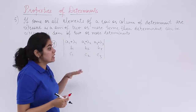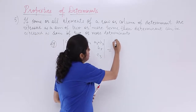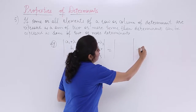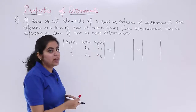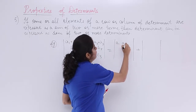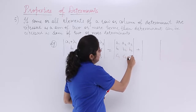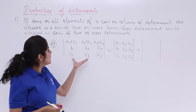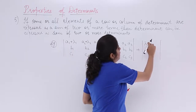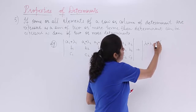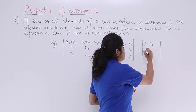According to this property, you can classify this determinant as the sum of two determinants. The first determinant has a1, a2, a3 in the first row, then b1, b2, b3, and c1, c2, c3. The second determinant has lambda1, lambda2, lambda3 in the first row, then again b1, b2, b3 and c1, c2, c3. Note it is not lambda1 plus lambda2 — they are separate elements.